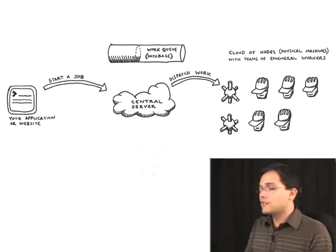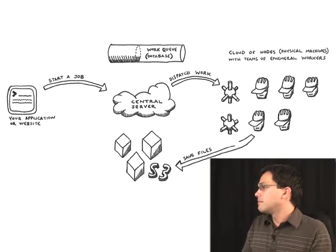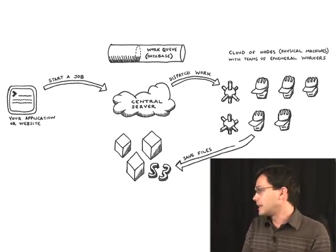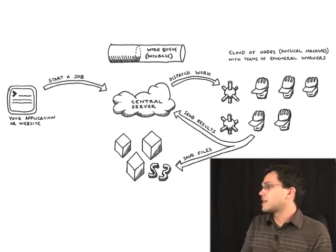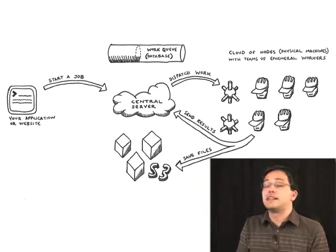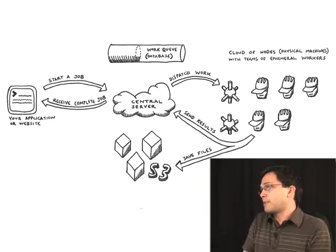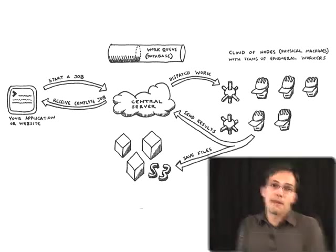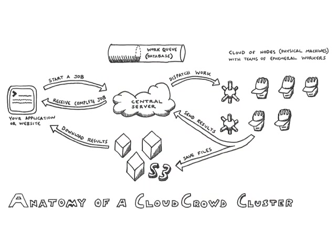Once that node completes the job, it might save those files to S3 and signify to the central server that it's complete. That central server might tell our web application that it's complete, and that web app might then go fetch the data from S3. So that's the anatomy of a Cloud Crowd cluster.